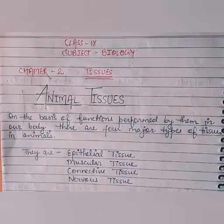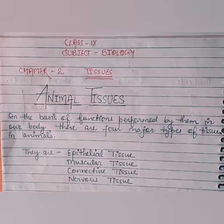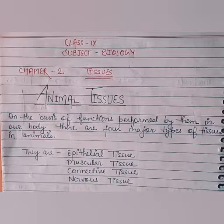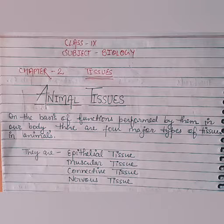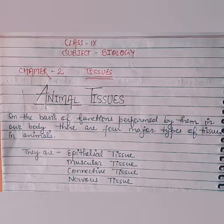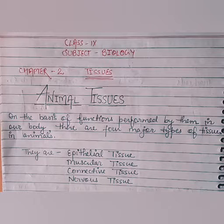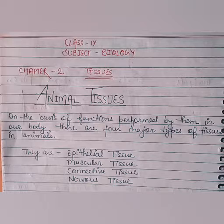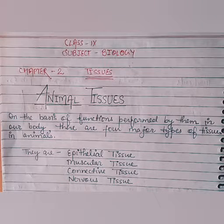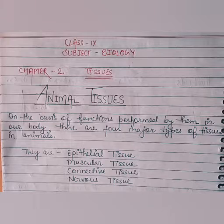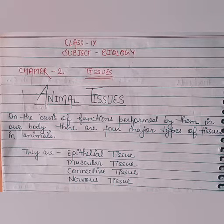In the previous video, we studied about plant tissues, in which you saw that plant tissues are of two kinds: meristematic and permanent tissues. Meristematic tissues are responsible for growth, and permanent tissues are tissues which have lost the capacity of cell division and have become permanent for their particular function.